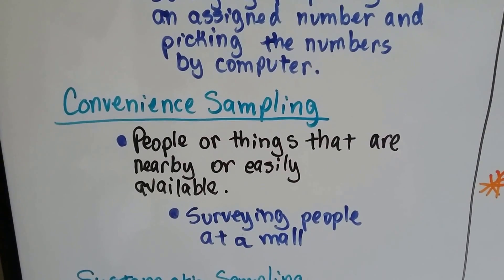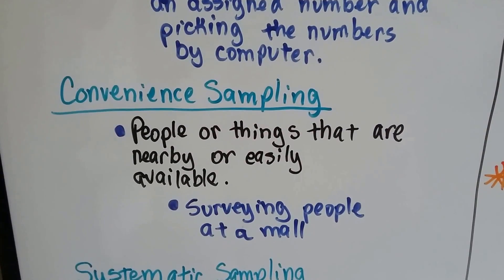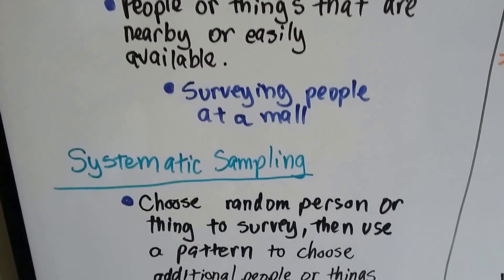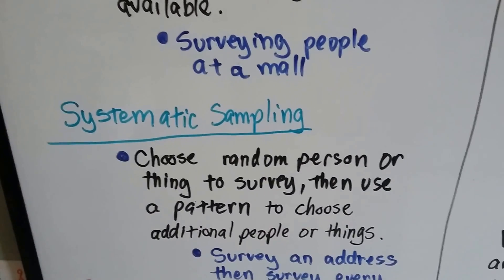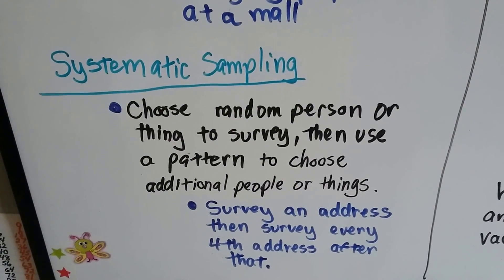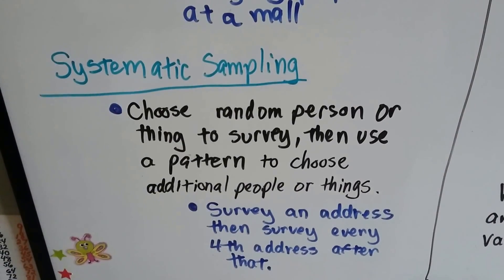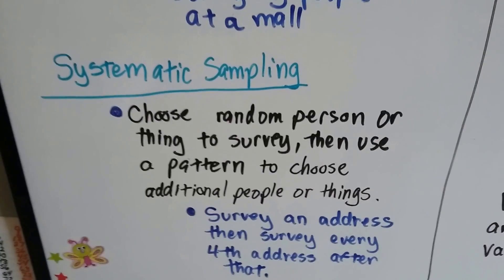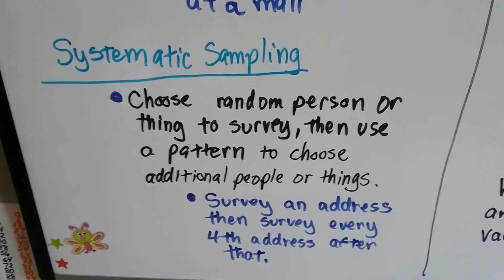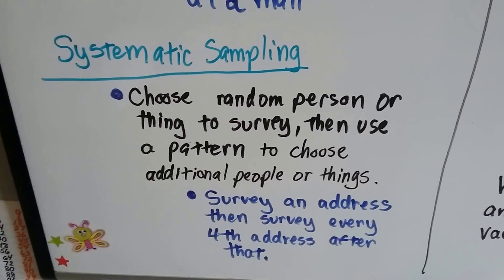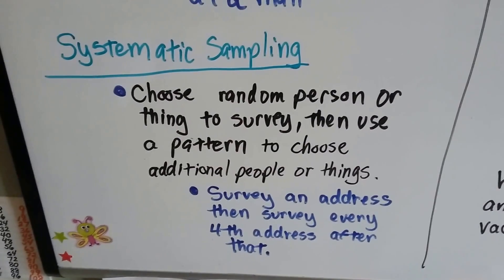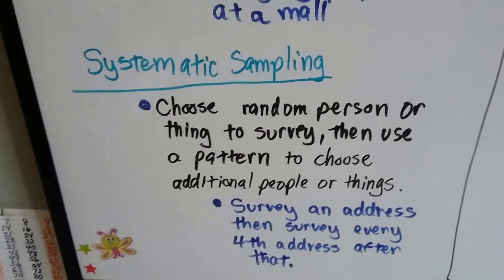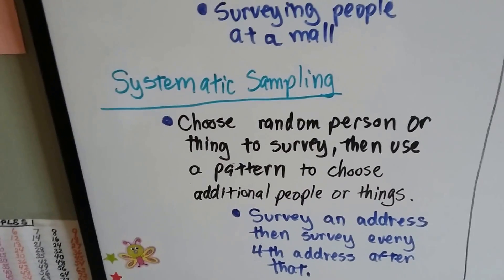Convenience sampling is when you sample people or things that are nearby or easily available — for example, surveying people at a mall, that's pretty convenient. Systematic sampling is when you choose a random person or thing to survey and then use a pattern to choose additional people. If you surveyed a house address and then surveyed every fourth address after that, that would be systematic.